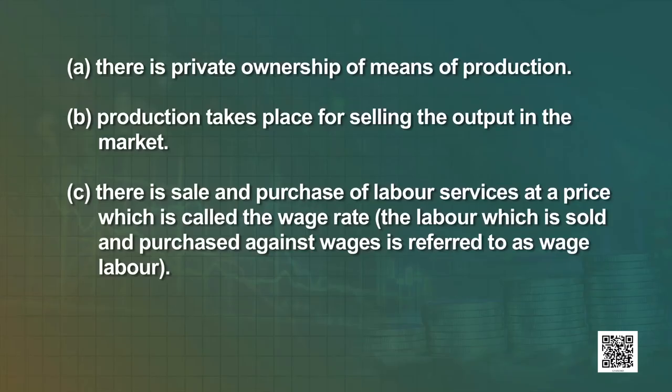First, there is private ownership of means of production. Second, production takes place for selling the output in the market. Third, there is sale and purchase of labour services at a price which is called the wage rate. The labour which is sold and purchased against wages is referred to as wage labour.